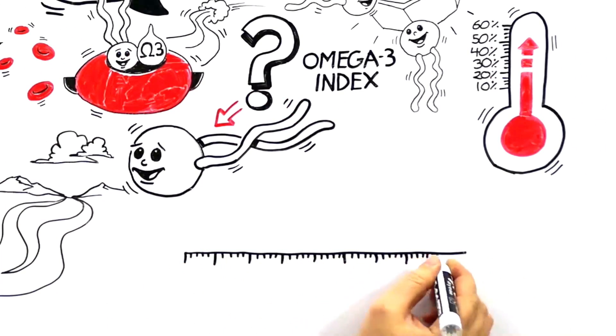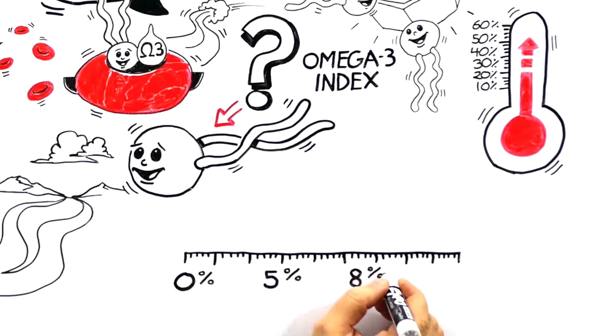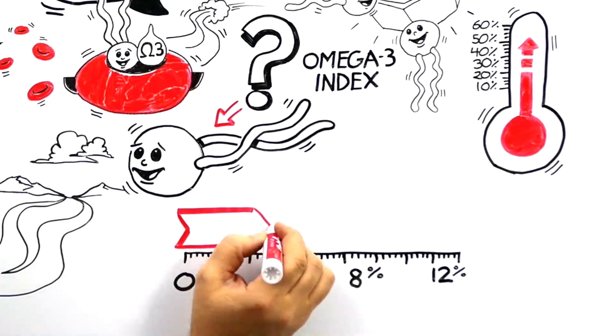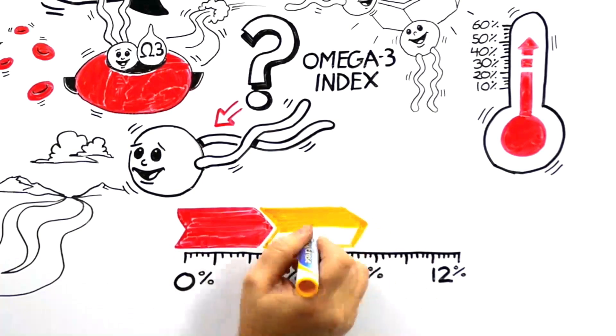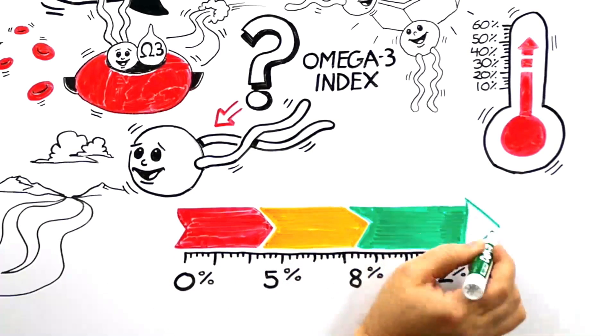An Omega-3 Index of 8% or above is considered optimal, while a low Omega-3 Index indicates a higher risk of sudden cardiac death and, potentially, other health issues.